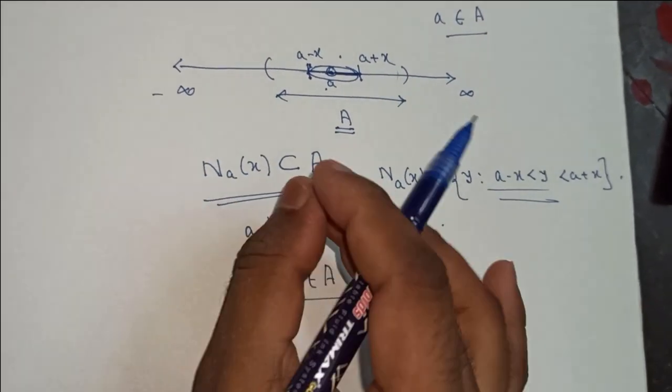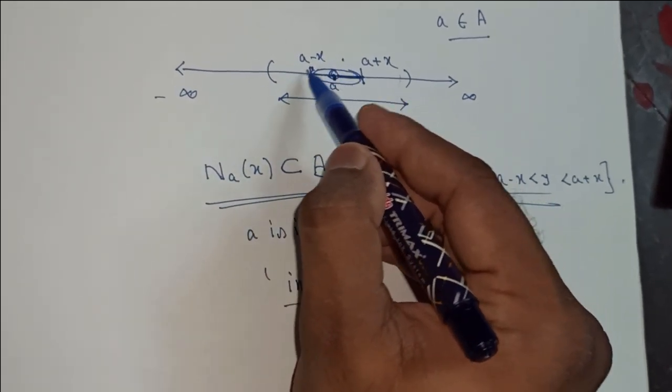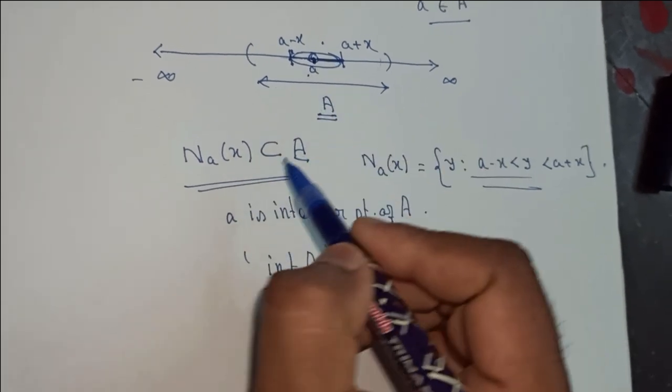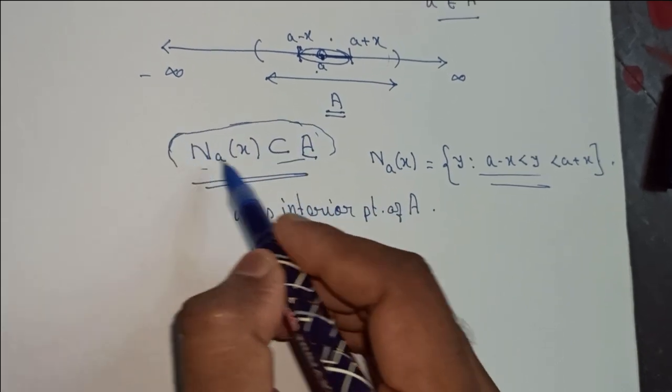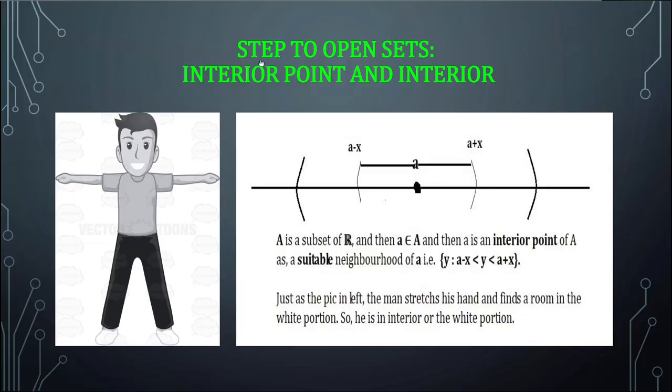I hope you guys understand this. So again, the concept is there is a bigger set and then we have an element of that set or a point of that set. And then we take a suitable neighborhood of that point and then we check whether that neighborhood is absolutely or exactly contained inside this A or not. This is what we have to check. So in the same way, in this diagram, you can see that this man has stretched its arm. You can think this man as the point A and these arms are epsilon, both sides epsilon. So this man, if this man is A, then this point is a plus epsilon and this point is a minus epsilon. And look at this man. The man is in the interior of this white box. So he is an interior point of that white box because he is there inside the white box. Similarly, think this box as set A.